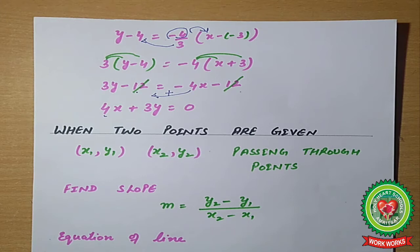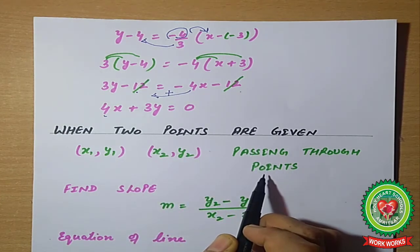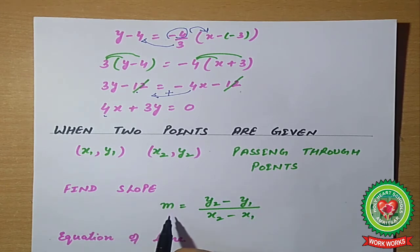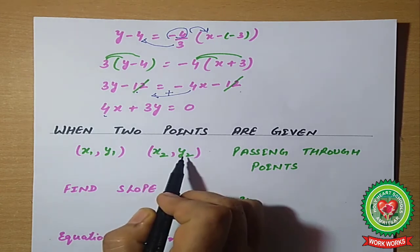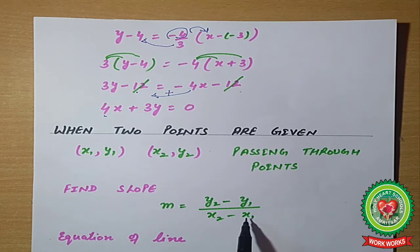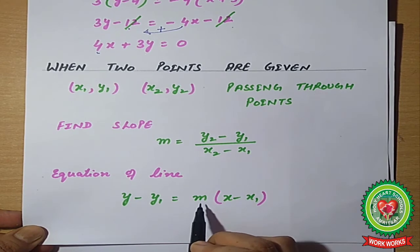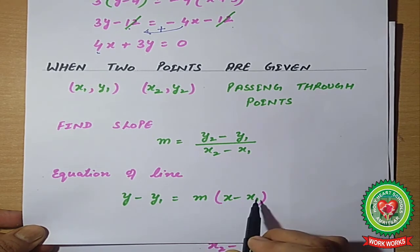The last condition is when only two points are given. You will have x₁, y₁ and x₂, y₂ as the passing-through points. First, find the slope using the formula m = (y₂ − y₁) / (x₂ − x₁), then apply the same equation of line: y − y₁ = m(x − x₁).